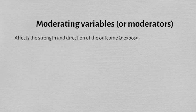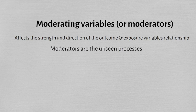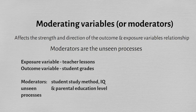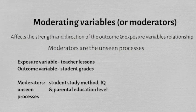Moderators affect the strength as well as the direction of the relationship between the outcome and exposure variables. Moderators are hidden, unseen processes — for example, student learning capabilities, intelligence, and parental education level are complex unknown factors that can increase or decrease the strength of the relationship between teacher lessons and student grades.